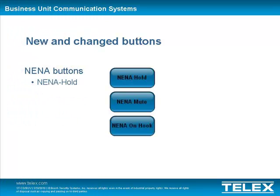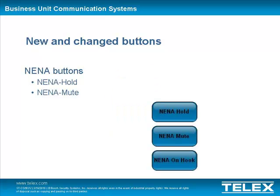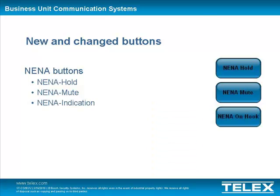The NENA hold function allows the console operator to place the NENA connected line to the ADHB4 on hold. While the NENA is on hold status, no TX audio is sent to the NENA and RX audio is sent to a specified unselect speaker. Also, a NENA mute button has been added to allow the console operator to mute the NENA audio. The NENA indication button is used for indicating whether the NENA line is on or off hook, and it also has a speaker icon to show the audio routing for the NENA on the ADHB4.